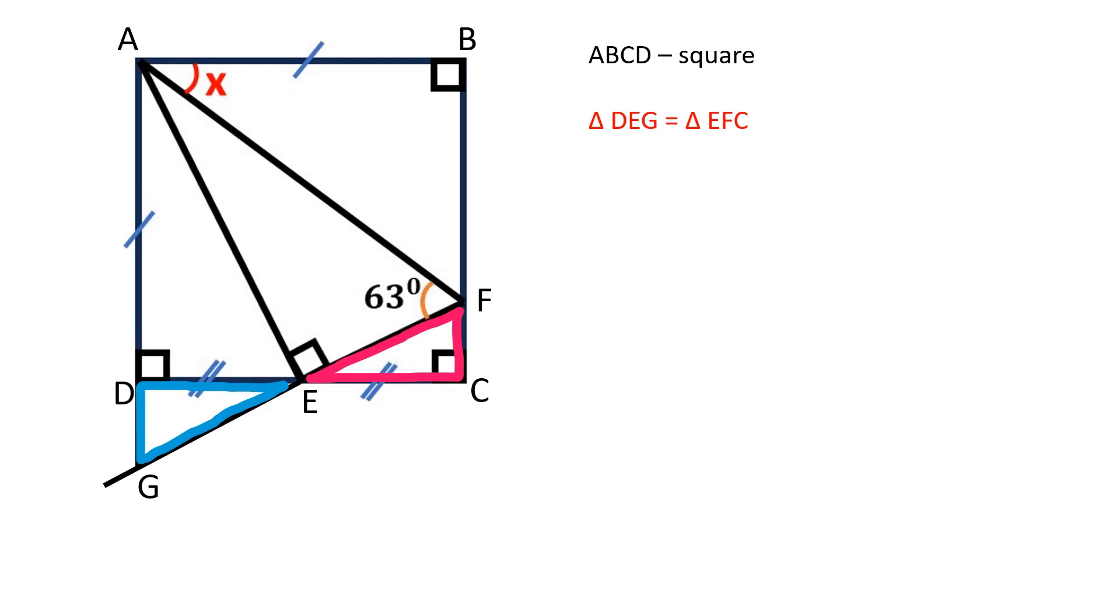Triangles DEG and EFC are congruent by two angles and the included side. Angles GDE and FCE are both equal to 90 degrees. DE is equal to CE.